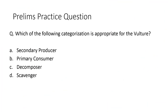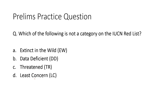Now let's take up the practice questions. Which of the following categorization is appropriate for the vulture? The correct answer is option D: scavenger. Now the second question: which of the following is not a category on the IUCN red list? The correct answer is option C: threatened — because we do not have a category known as 'threatened' but we do have a category known as 'near threatened'.